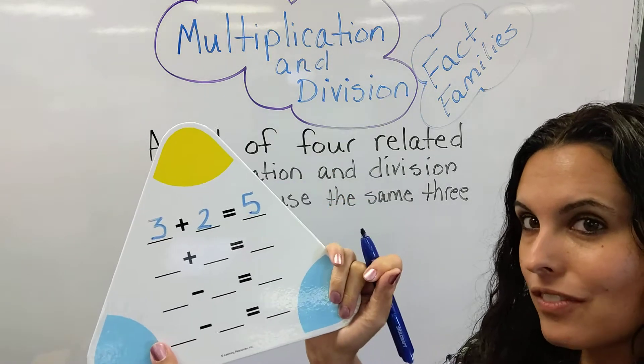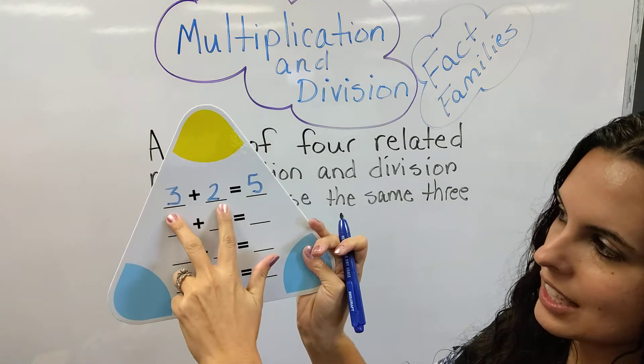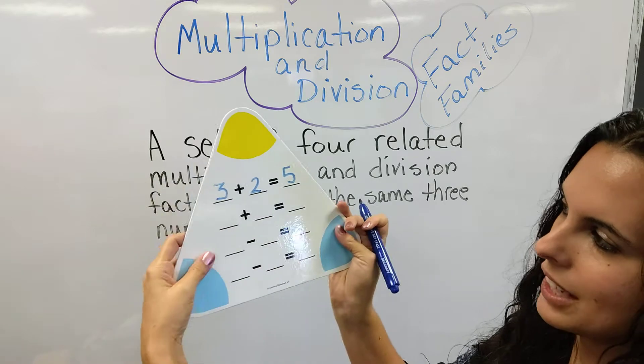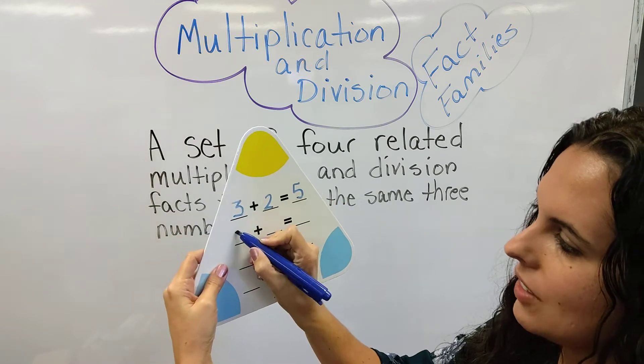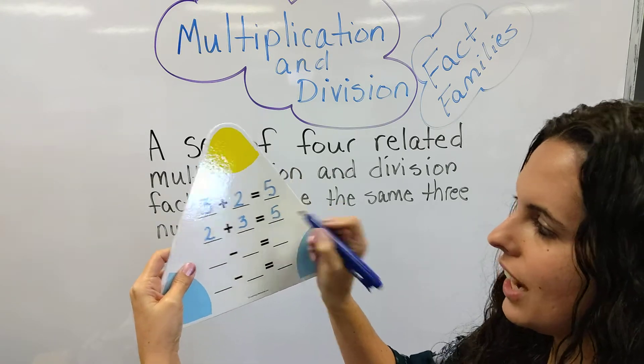So when we have that and you want to do your fact family, you're actually going to take these two numbers and they're going to trade places. So 3 plus 2 equals 5, but 2 plus 3 also equals 5.